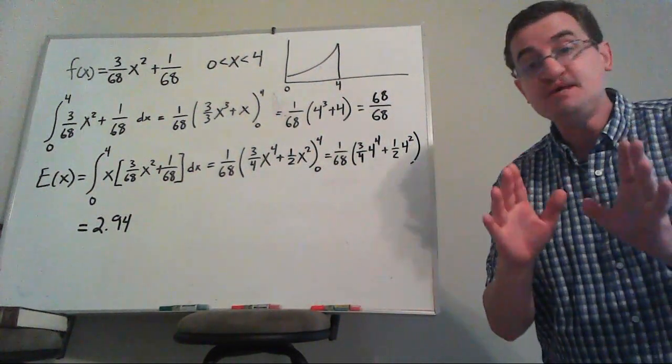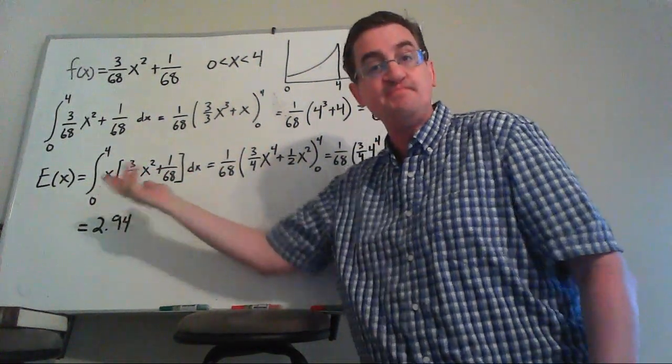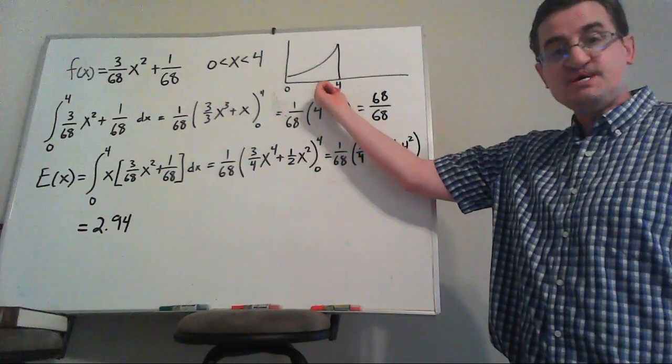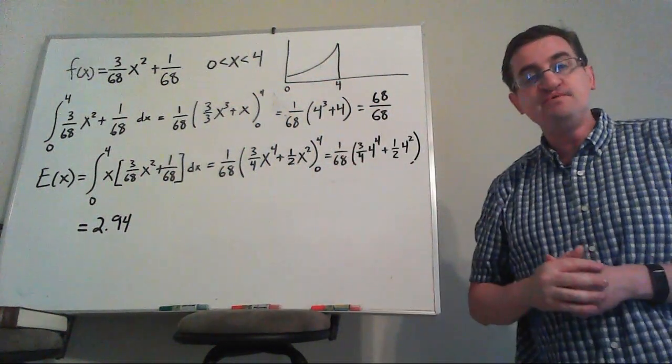Notice this is the same thing we were doing before, x times f of x, and then you add all those up using an integral. Does that look about right? Is almost 3 the balancing point here? Yeah, that seems reasonable. So there is our expected value of x.